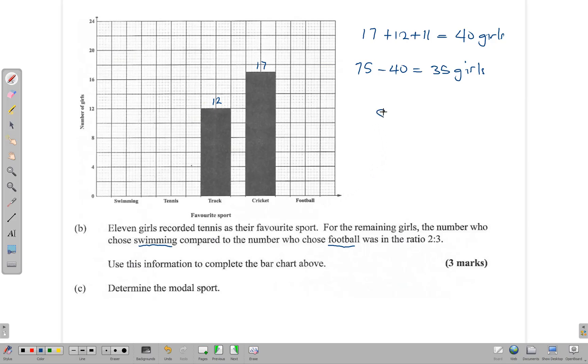Now this number, 35, is to be shared between football and swimming in the ratio 2:3 - swimming and football in that order, 2:3. We add 2 plus 3, which gives us 5.